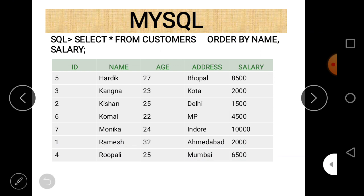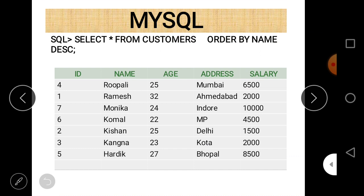You can see that the first name is Hardik, then Kangna, Kishan, Komal — H comes first, then K (Ka, Ki, Ko), then Monica starting with M, then Ramesh and Rupali. In this case all data is sorted by name, and there is no need to sort by salary because all names are unique, so salary sorting only applies when names are the same.